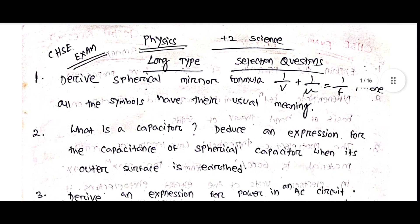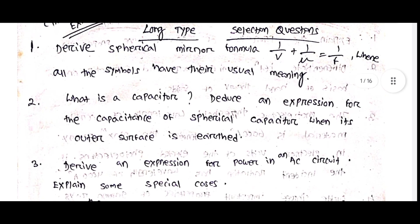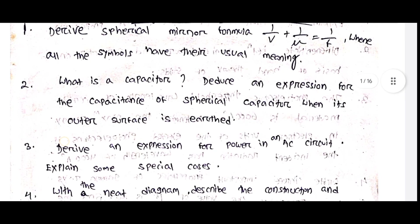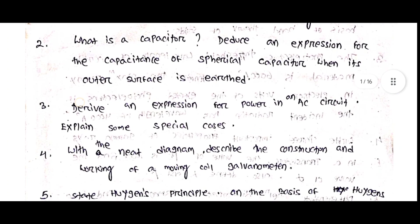We have a long-time physics question, because we have a selection of questions. Derive the spherical mirror formula: 1/v + 1/u = 1/f, where all the symbols have their usual meaning.